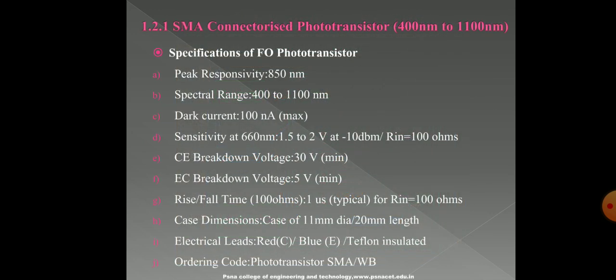This slide shows the specification for the F4 photo transistor, operating in the wavelength range of 400nm to 1100nm. It is specified by parameters such as peak responsivity, spectral range, dark current, sensitivity, breakdown voltage (CE and EC), rise and fall time, case dimensions, electrical leads, and ordering code.